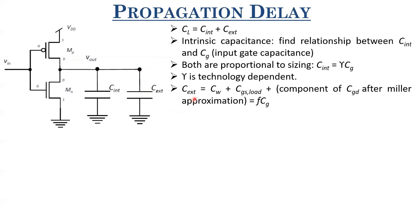C_x can also be expressed as F·CG, where F is the fanout factor - how many gates this inverter is driving and what is the CG of all those gates. If it is driving F identical gates each having input capacitance CG, then it's simply F times CG. C_w is typically pretty small and CGD is also small, so C_external is basically dominated by CGS_load, which is given by F·CG. This is an approximation, not an exact value.